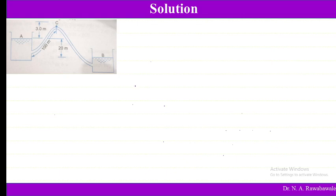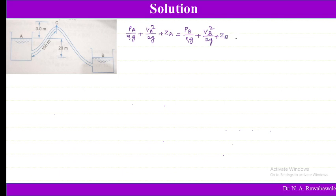Neglecting minor losses and applying Bernoulli's equation between points A and B, we write: PA divided by rho g plus VA squared divided by 2g plus ZA equals PB divided by rho g plus VB squared divided by 2g plus ZB plus head loss due to friction HF. Since both pressures are atmospheric they cancel, and VA equals VB so velocity terms cancel. We are left with ZA minus ZB equals HF, which equals 4fLV squared divided by 2gD.